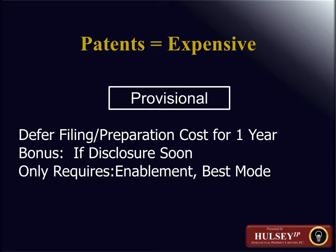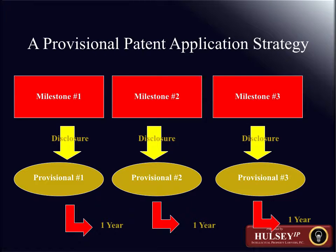As to mechanical inventions, software, and electrical inventions, the drawings are essential to describe and show what is being claimed. Once the drawings are prepared, it's possible to draft the background of the invention — which describes essentially the world prior to the innovation that led to the invention — and then the summary of the invention, which is a description in layman's language of what the invention is, so that upon reading the patent application you can get a clear idea of what the invention is.